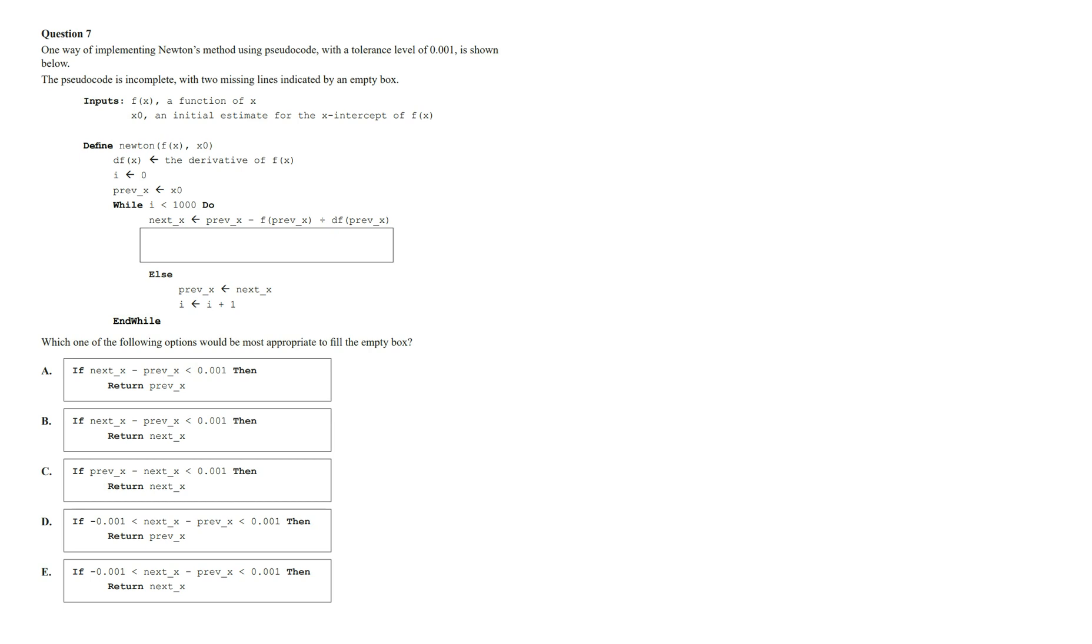In this video I'm going to show you how to answer the 2023 MATS method sample exam 2 question 7. We've got one way of implementing Newton's method using pseudocode with a tolerance level of 0.01 is shown below. The pseudocode is incomplete with two missing lines indicated by an empty box. Which one of the following options would be the most appropriate to fill the empty box?